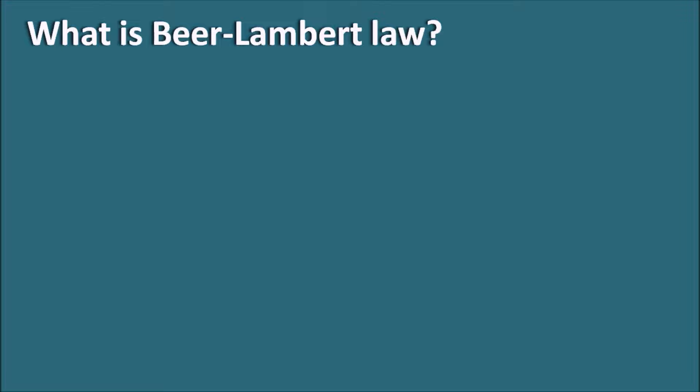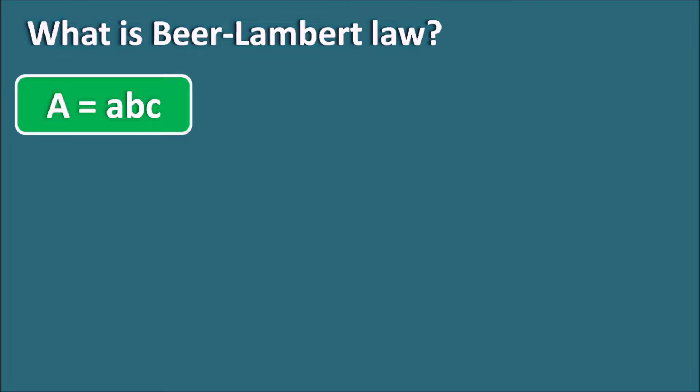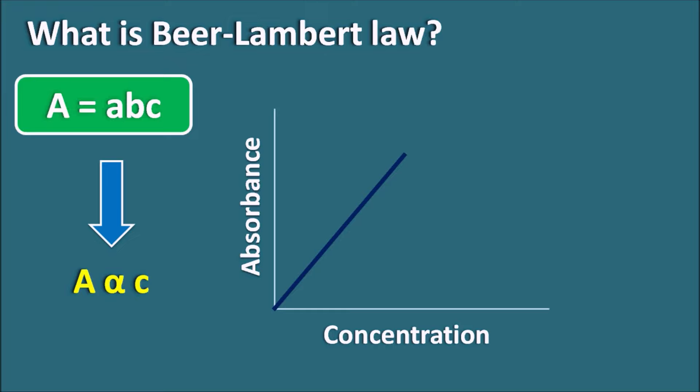What is Beer-Lambert law? Beer-Lambert's law gives a relation between the absorbance and the concentration of the analyte, which can be stated as A = abc, where capital A is the absorbance and small a is the absorptivity. This law simply states that absorbance is directly proportional to concentration for a particular analyte at a particular temperature and wavelength of radiation. So when we plot absorbance versus concentration for an analyte, we will get a straight line passing through the origin.